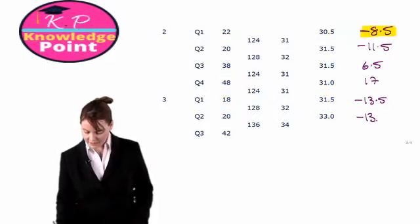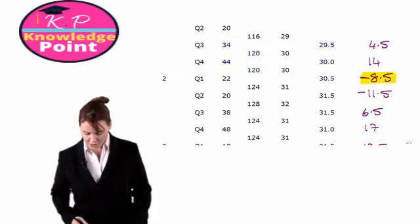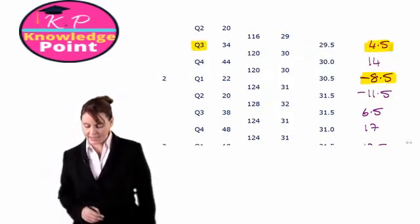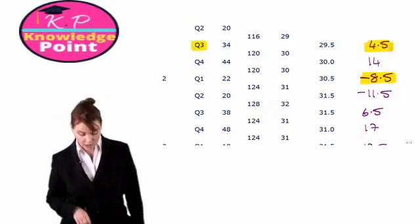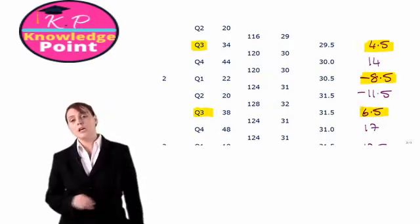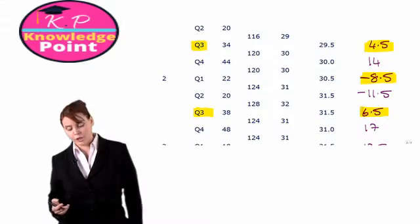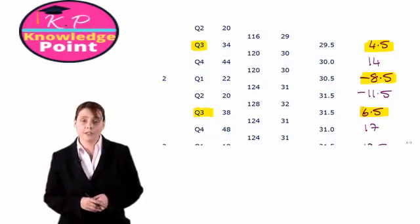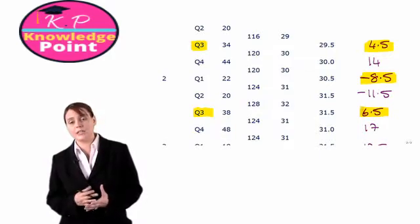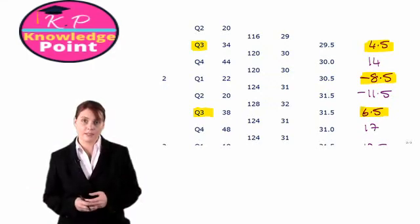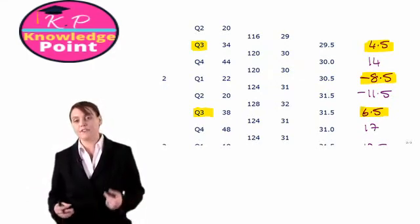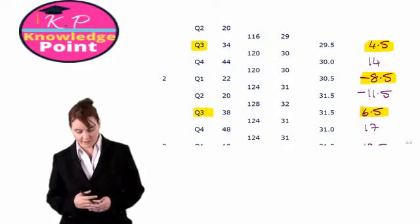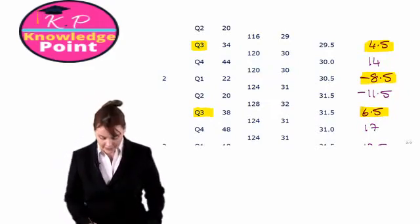Looking at the seasonal variation information we have just calculated, we have a problem. For quarter three of year one we calculated a seasonal variation of 4.5, whereas for quarter three of year two our seasonal variation is 6.5. We have two different seasonal variations for quarter three. The reason our figures are slightly different is because we are using our centred moving averages to estimate the seasonal variation. Since we have two different values for each quarter, we will need to calculate the average seasonal variation and set up a table in a new sheet.